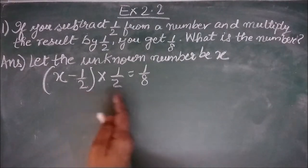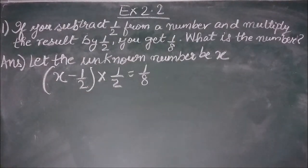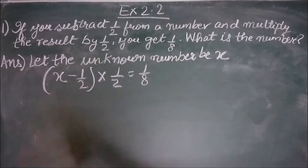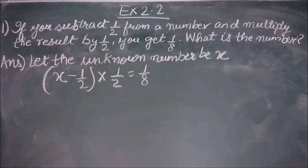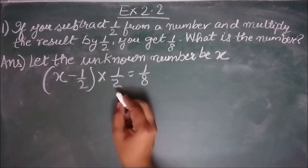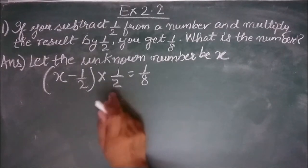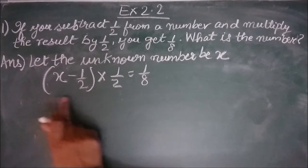This is our linear equation in one variable. The variable is x which is on the left hand side and the constants are 1 by 2, 1 by 2 and 1 by 8. Let us move all the constants to the right hand side. Let us work out this one first since this is in multiplication with the entire term.